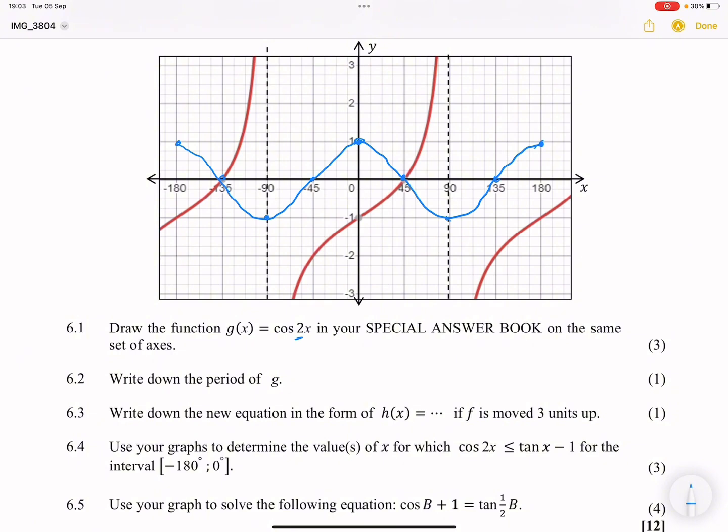Now they say to us, write down the period of g. Remember in this case, whenever we talk about period, we know that period is always going to be equal to 360° divided by the frequency. Our frequency in this case is 2, that's the coefficient of our variable or our x, so this is 360° over 2, which means that our period is 180°. That means we'd be able to complete a full cos graph within a 180 degree cycle.